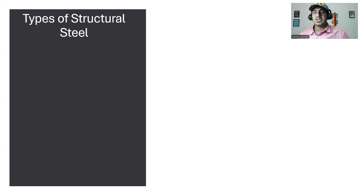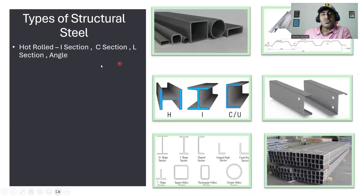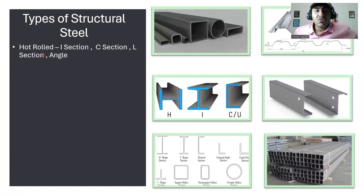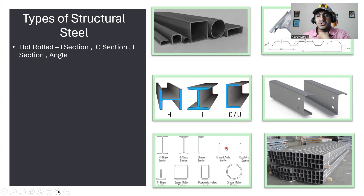Welcome back to the lecture. Now we will try to understand the types of structural steels. The first one we have is a hot roll section. In the hot roll section we have I-section, C-section, L-section, and angle section. You can see this: I-section, then we call this a channel section, then we have angle section.